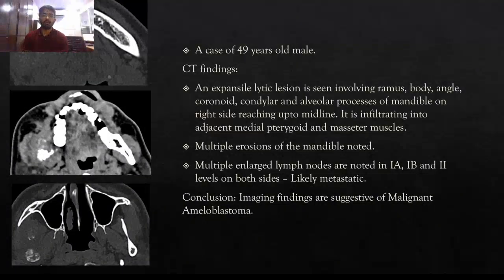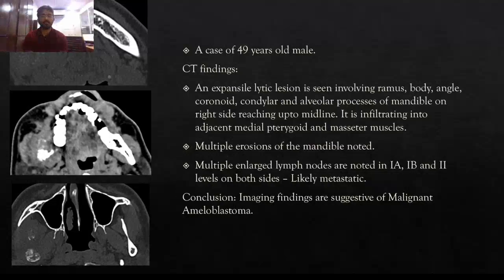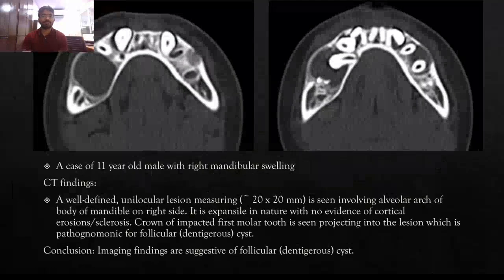Case 6: a 49-year-old male patient. CT findings show a large lesion involving the ramus and body of the mandible as well as the coronoid process on the right side, reaching up to midline, with infiltrative edges involving the medial pterygoid muscle and masseter muscle. Multiple erosions of the mandible noted. Conclusion: malignant lesion, ameloblastoma.